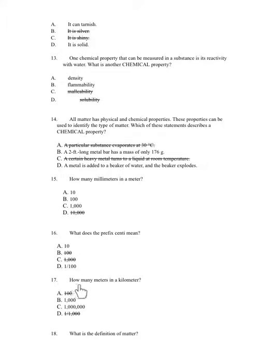Number 17. How many meters in a kilometer? A. 100. B. 1000. C. 1,000,000. D. 1 divided by 1,000.